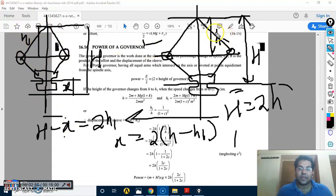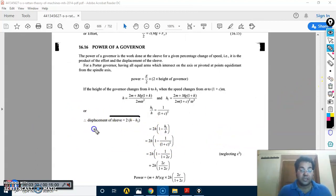Small h, height of the governor, h1, h minus x equals two times h1—total height. What you will get: small x equals two times (h minus h1), the displacement of the sleeve.